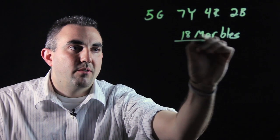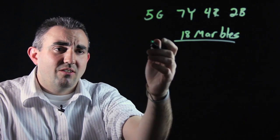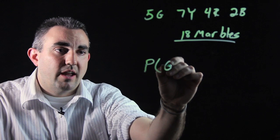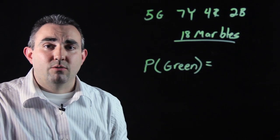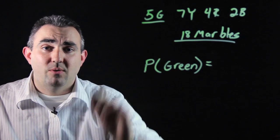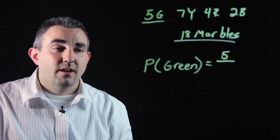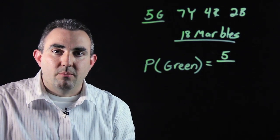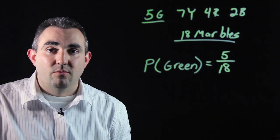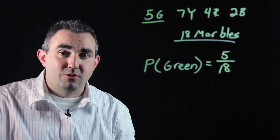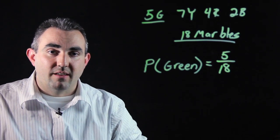Knowing the total number of marbles is going to be important to doing these probability problems. So let's look and see what the probability of choosing a green marble would be. Probability of choosing green - you have to know how many green marbles there are, and in this case we have five green marbles. That becomes your numerator, or your top number in your fraction, over the total amount of marbles, which is eighteen. So the green marbles over the total marbles is five over eighteen. That's the probability of choosing a green one. This number can be changed to a decimal or a percent, depending on what you're being asked to do.